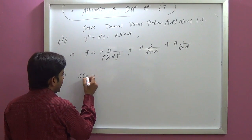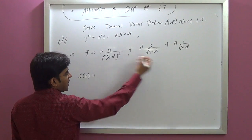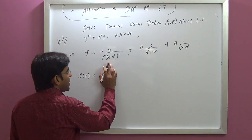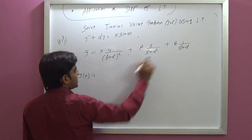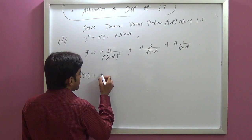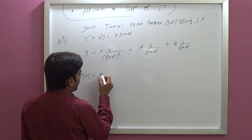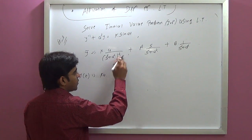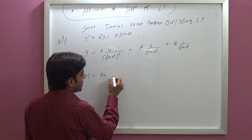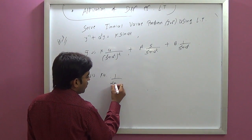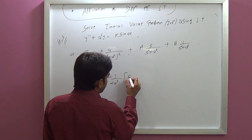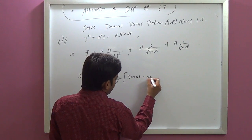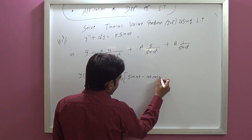Taking the inverse Laplace of y(t): k·a times the inverse of 1 over (s-squared plus a-squared) squared. That formula gives 1 over 2a-cubed times (sin(at) minus at·cos(at)).